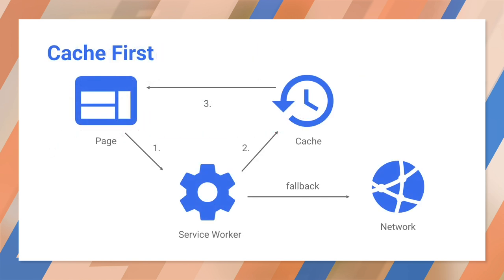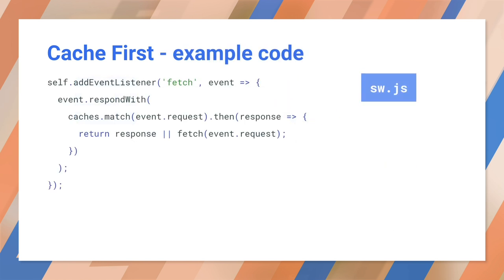The cache-first strategy is also known as falling back to the network. The service worker goes to the cache first, and if the resource isn't found, then it goes out to the network. If you're building offline-first, this is how you'll handle the majority of requests. Other patterns will be exceptions based on the incoming request. This gives you cache-only behavior for things in the cache and network-only behavior for anything not cached, which includes all those non-GET requests that can't be cached. As you can see from the code example, the service worker checks the cache first, returns a response if available, and otherwise makes a fetch request to the network.